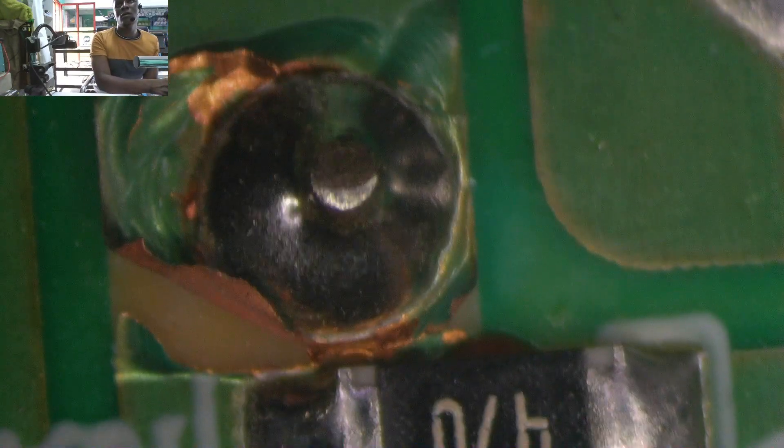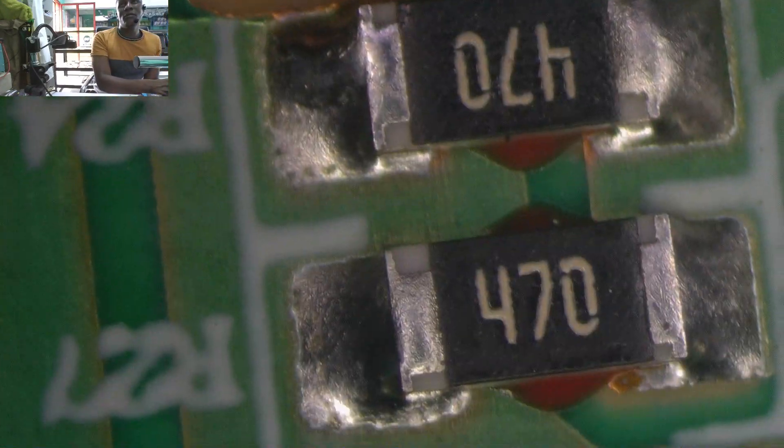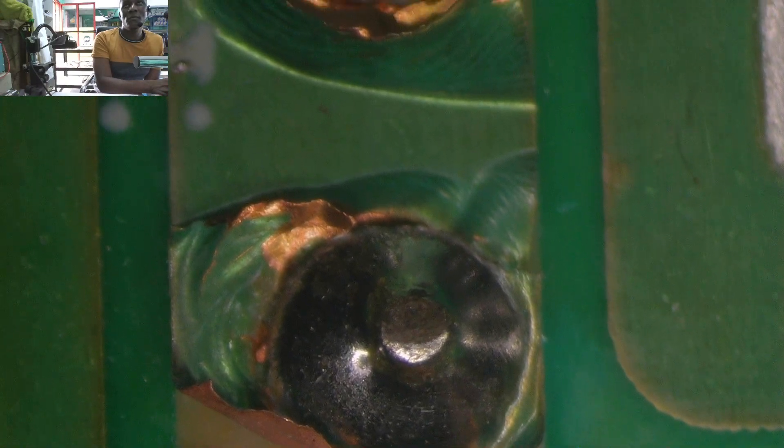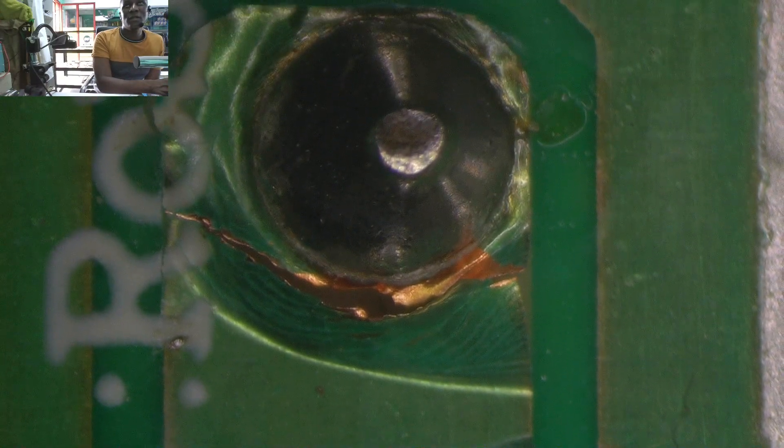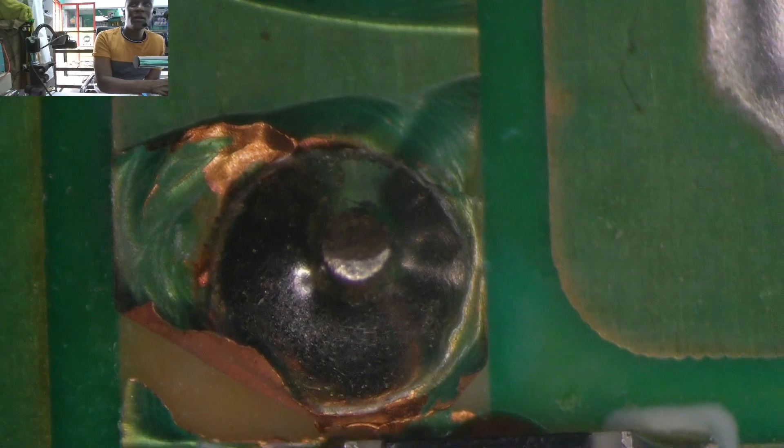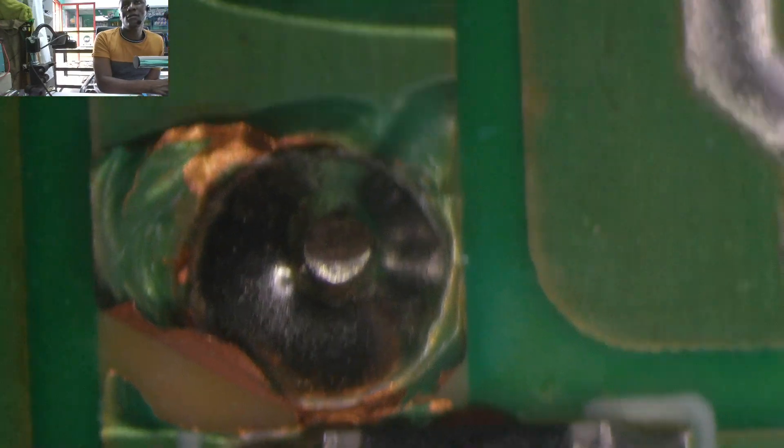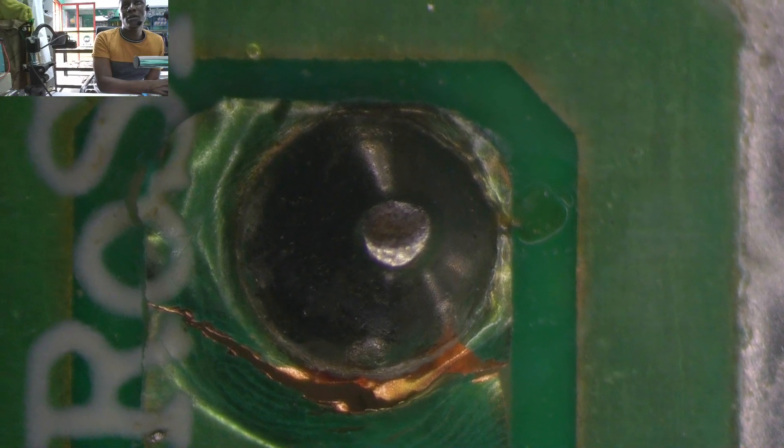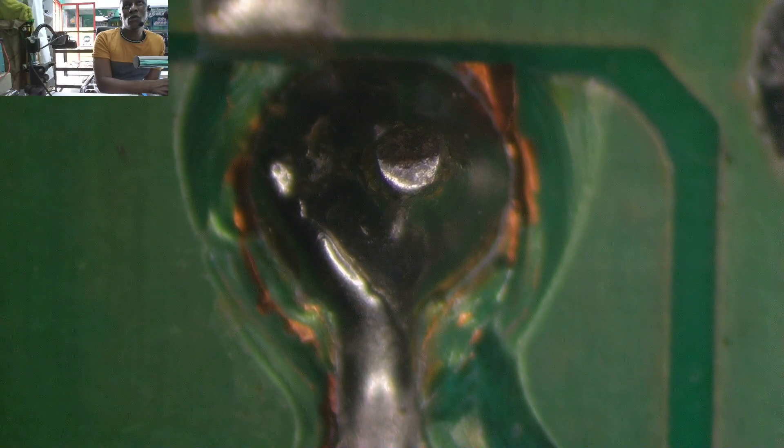You see, those are pins of the transformer on the secondary side. You can see some broken lines. This pin, second pin, third pin and fourth pin. I'm sure that's the problem here.